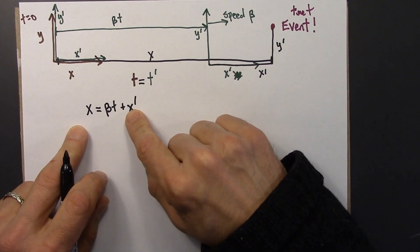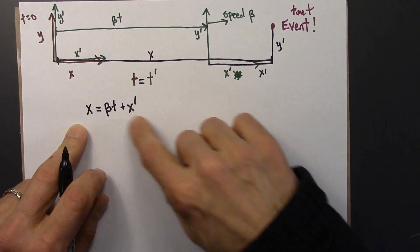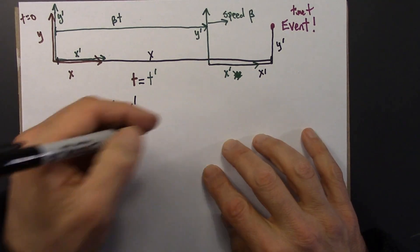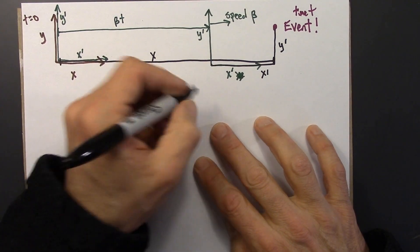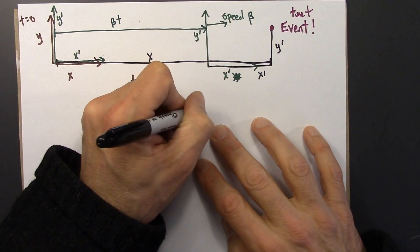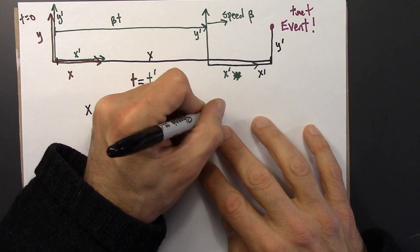Okay, I could also express this in terms of x prime by just moving beta t over to the other side. So x prime, I could also write as x minus beta t.